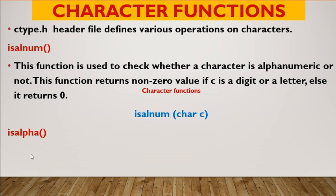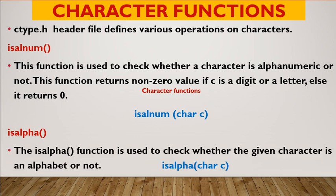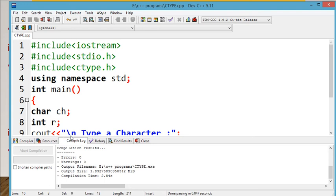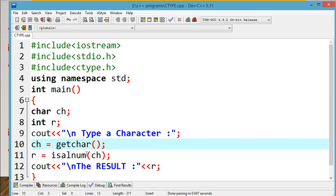The next function is isalpha. The isalpha function is used to check whether the given character is an alphabet. If the character is an alphabet, it returns a non-zero answer. Otherwise, we will display 0.